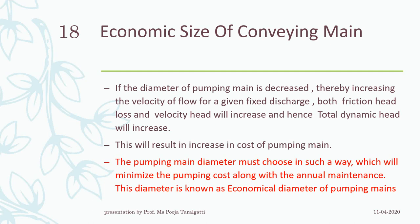If the diameter of the pumping main — that is, the pumping pipeline — is decreased, it increases the velocity of flow. For even a fixed discharge, both the friction head and the velocity head will increase, and hence the total dynamic head will increase. We keep on reducing the diameter to get more pressure at the consumer end, but at a certain level decreasing the diameter increases losses and velocity head, so total head increases. You can't just keep reducing the diameter to achieve a certain pressure.